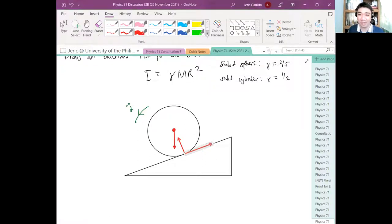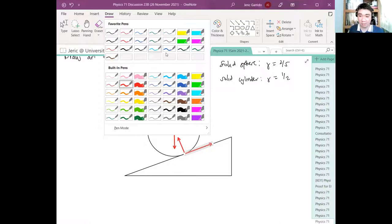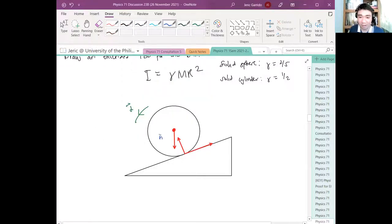So this is the normal force N, this is capital MG, and this is frictional force F. This angle here is some beta. Even if the ball goes up, the frictional force should still point in the same direction. Why?